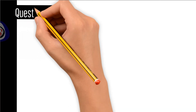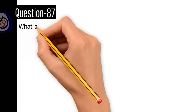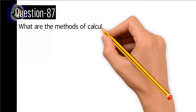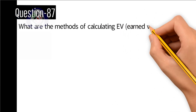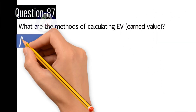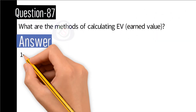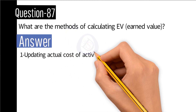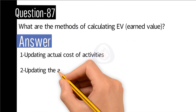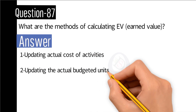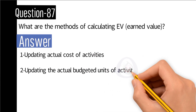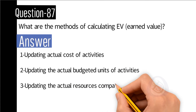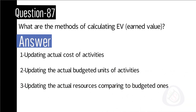Question number 87: What are the methods of evaluating earned value? Answer: 1) Updating actual cost of activities. 2) Updating the actual budgeted units of activities. 3) Updating the actual resources comparing to budgeted ones.